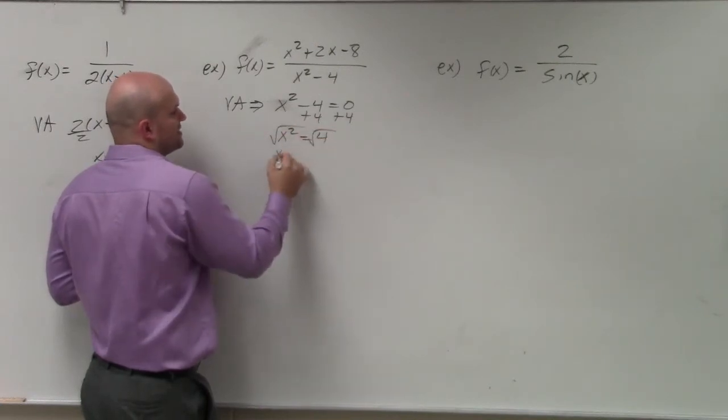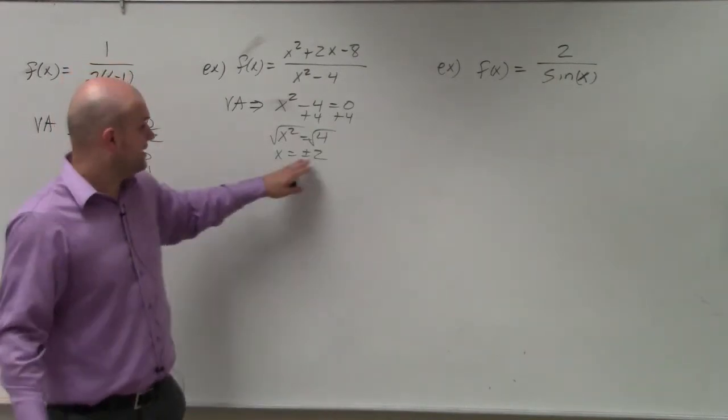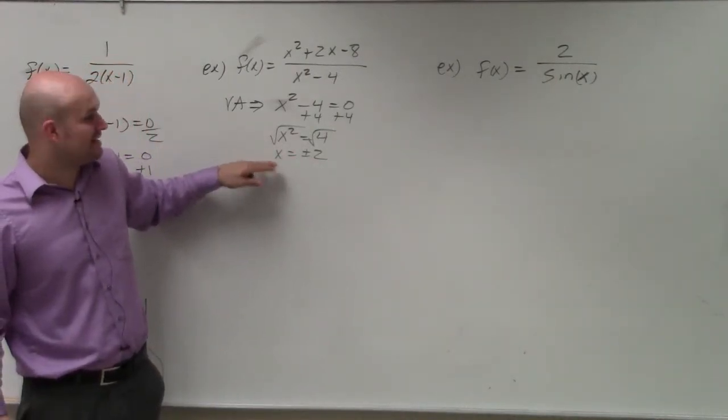Square root, square root, x equals plus or minus two. Right? So now we know that, all right, my asymptote could be plus or minus two.